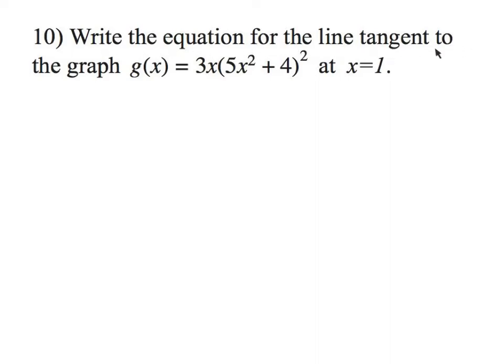Write the equation of the line tangent to the graph at x equals 1. To do this we want to find the derivative at 1 and the value at 1, so we're going to have to do both. Let's just find the value at 1 first. That's a lot easier.